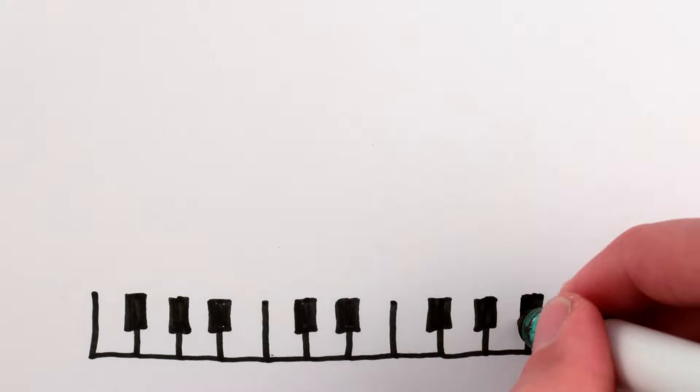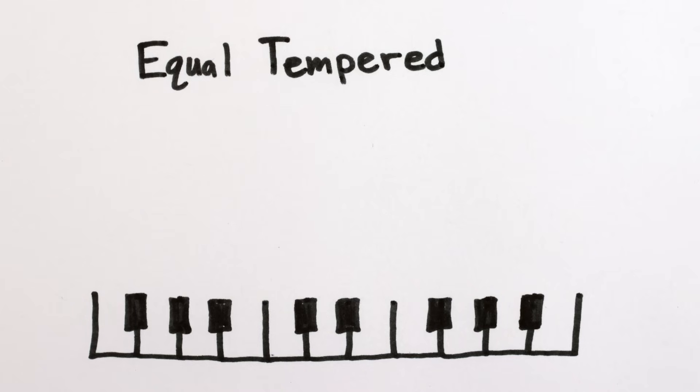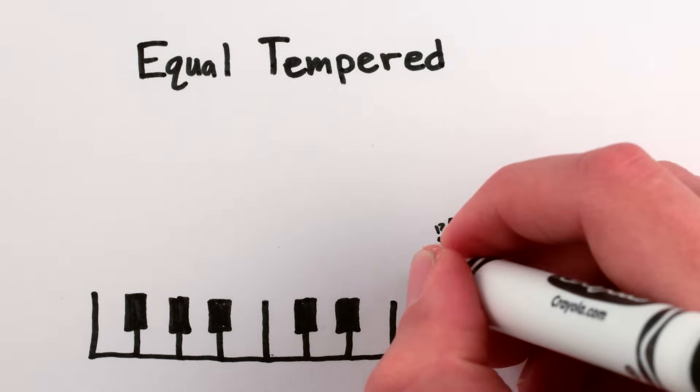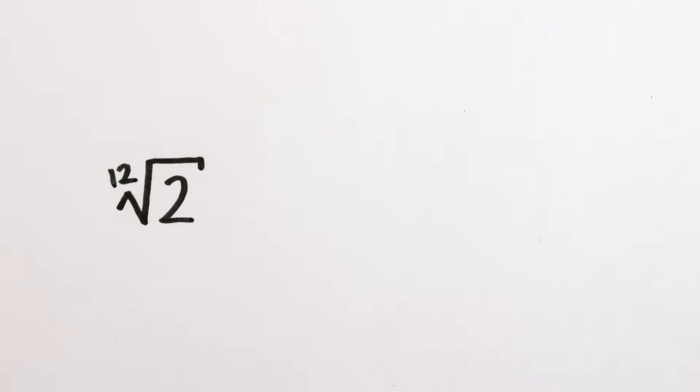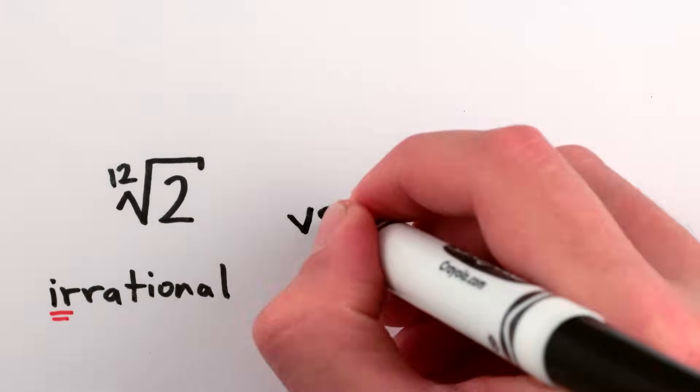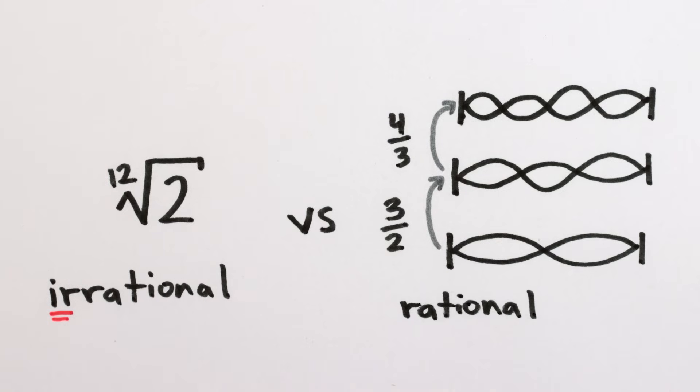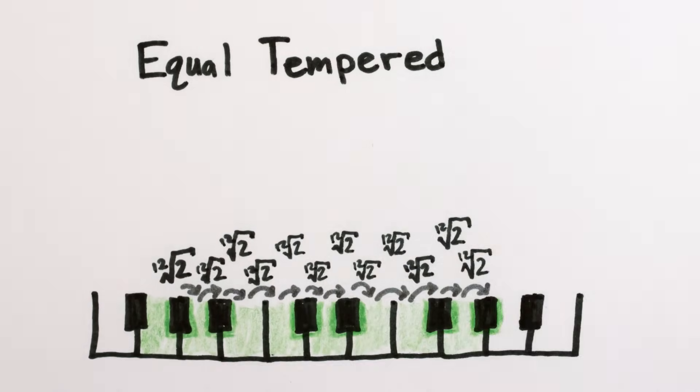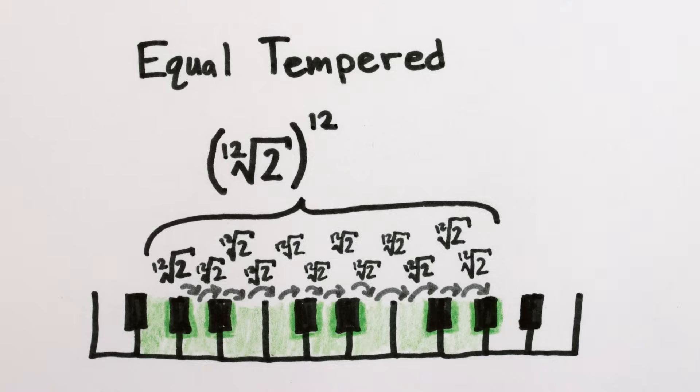Most pianos these days use what's called equal-tempered tuning, where the frequency of each key is the twelfth root of two times the frequency of the key below it. The twelfth root of two is an irrational number, something you'd never get using the simple ratios of harmonic tuning. But its benefit is that once you go up twelve keys, you end up with exactly the twelfth root of two to the twelfth, or twice the frequency. A perfect octave.